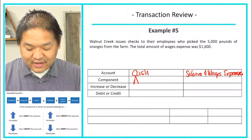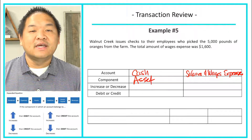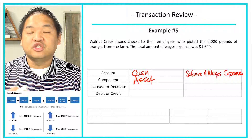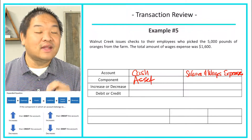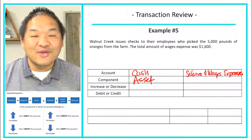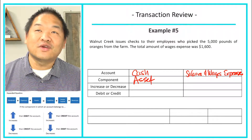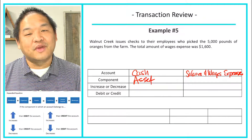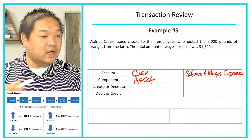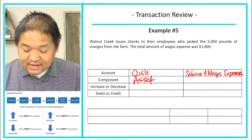What type of account is Salaries and Wages Expense? Typically if it has the word 'expense' at the end, it's an expense. There are exceptions — deferred expense is a liability, and accrued expenses are liabilities. Prepaid expenses are assets. So just know that most expenses are expenses, except for a few like accrued expenses and prepaid expenses. In this case, Salaries and Wages Expense is an expense.